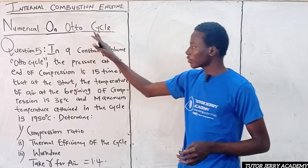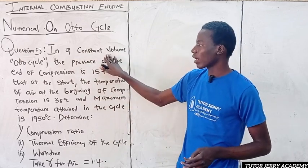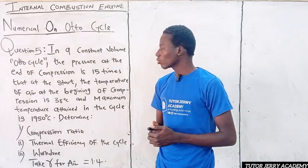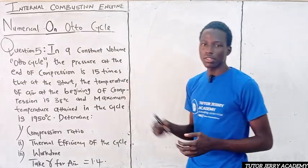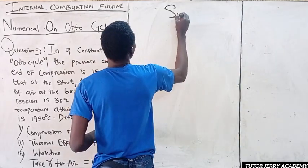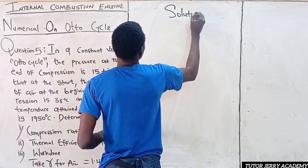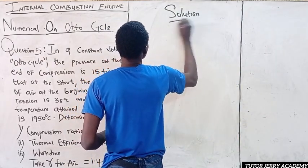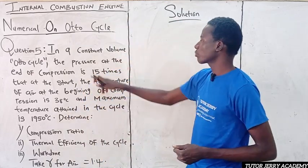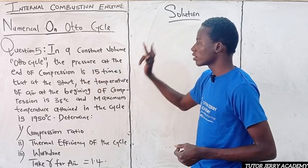We are given gamma of air to be 1.4, so the gas we are considering is air. Let's proceed to solve this question. First, I am going to bring out the data given. The pressure at the end of compression, P2, is 15 times that at the start, P1.